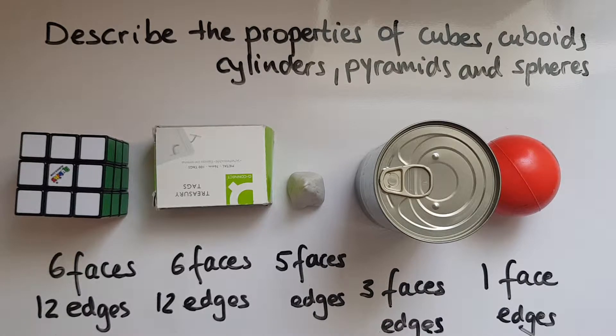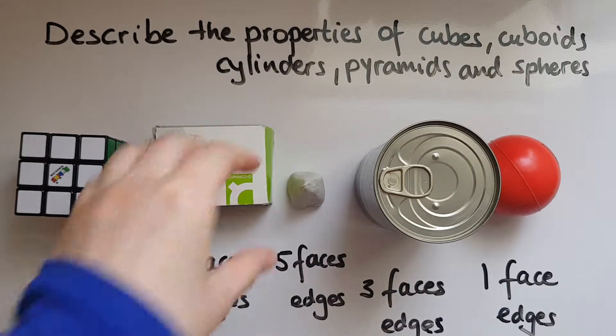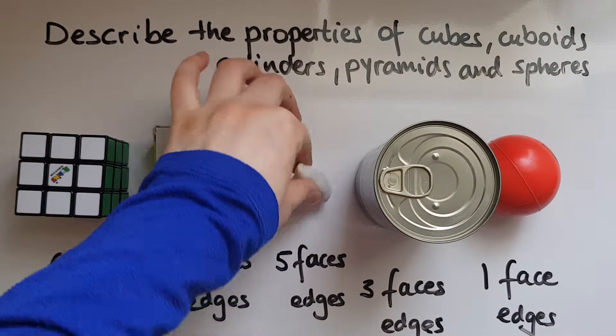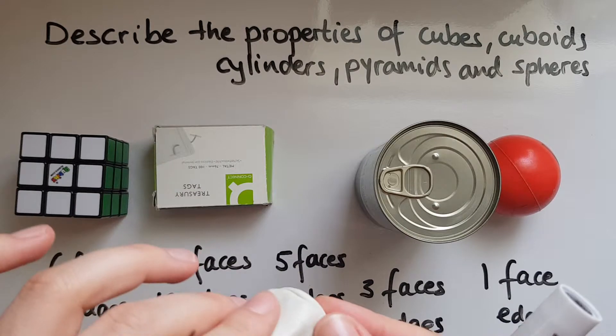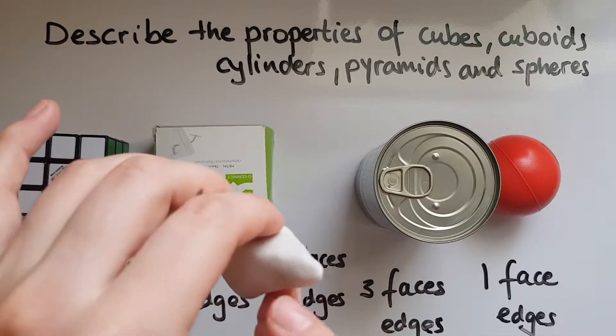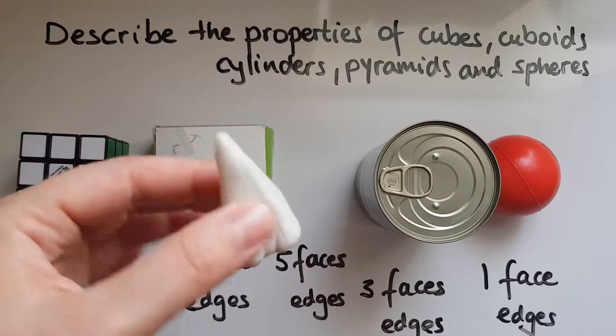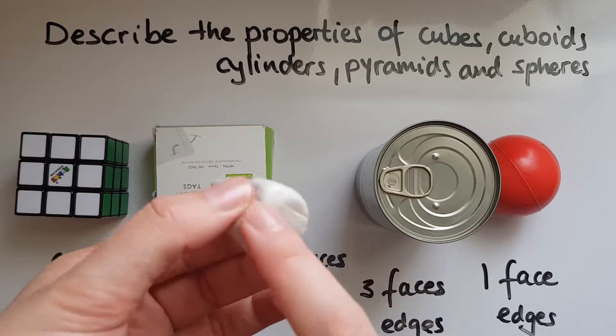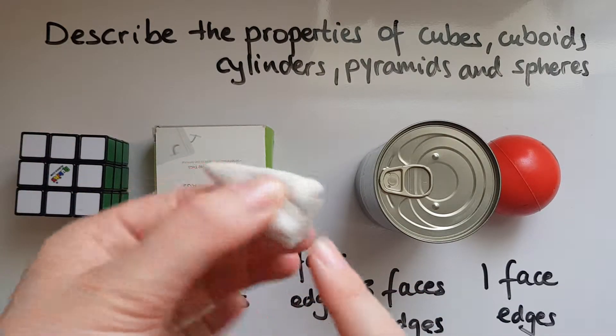How about the pyramid? Counting: one, two, three, four, five, six, seven, eight. So a square-based pyramid has eight edges.